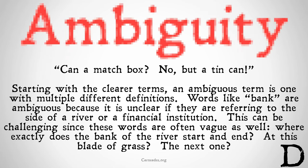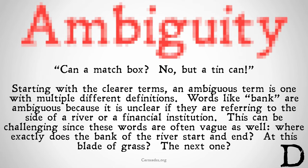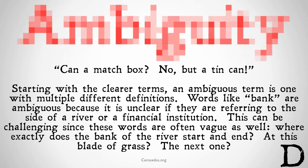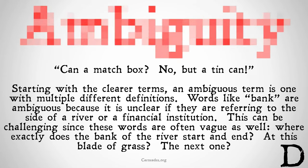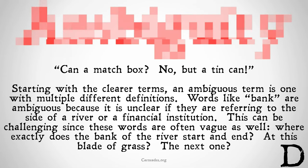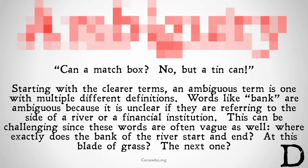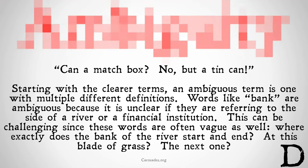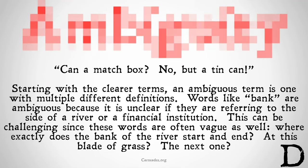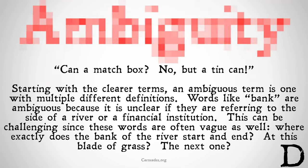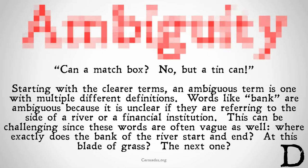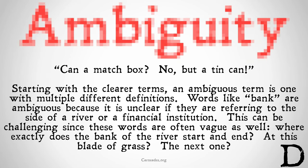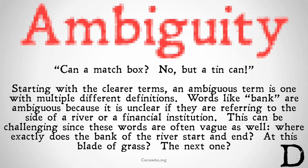This can be challenging since these words are often vague as well. Where exactly does the bank of the river start and end? At this blade of grass? At the next one? So the word 'bank' is both ambiguous — because it could refer either to the bank of a river or a financial institution — and vague, because there are absolute borderline cases where it's unclear if this blade of grass is on the bank of the river or not.